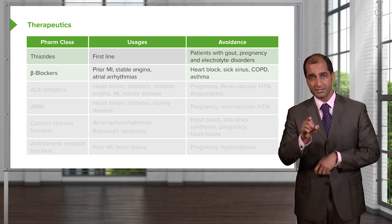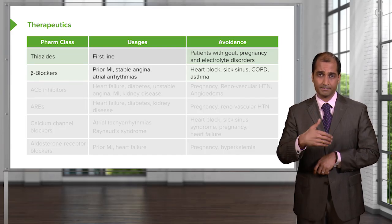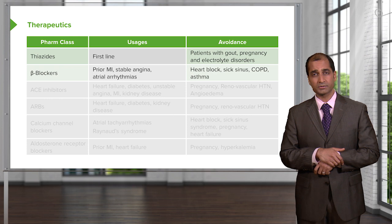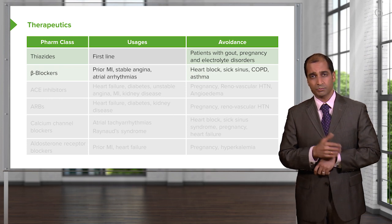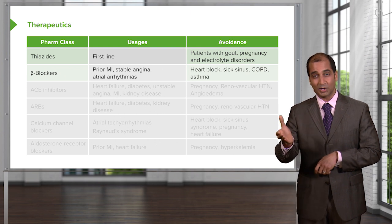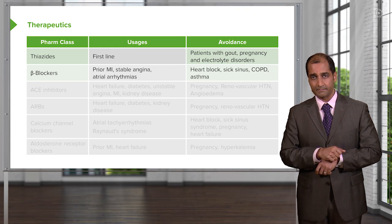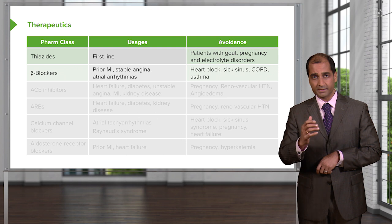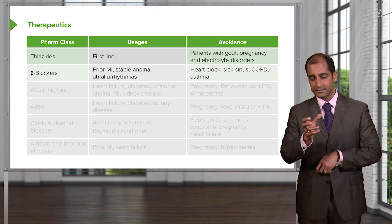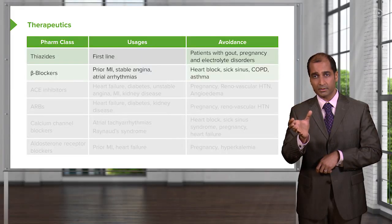Avoidance: if your patient already has heart block — some type of AV nodal block — why would you want to use a beta blocker? There's every possibility that you might stop the heart permanently. Sick sinus syndrome: same concept, you have an arrhythmia with a gap on the EKG, and you don't want to stop the heart permanently.